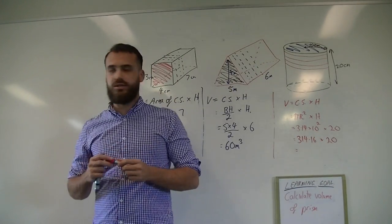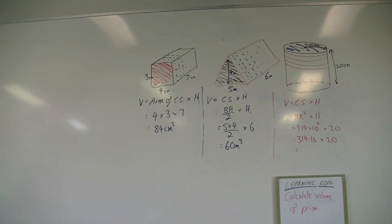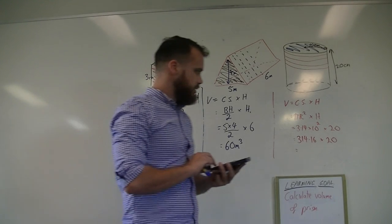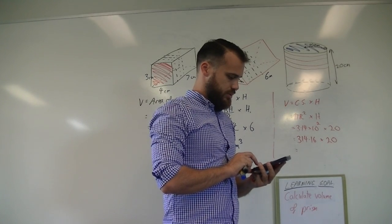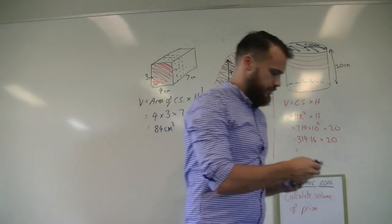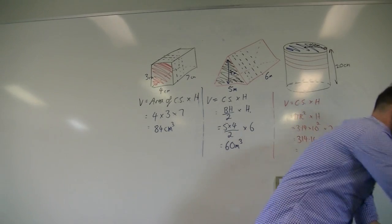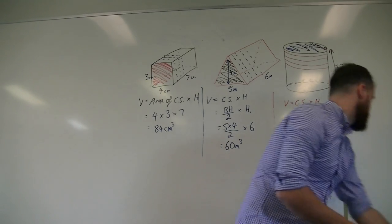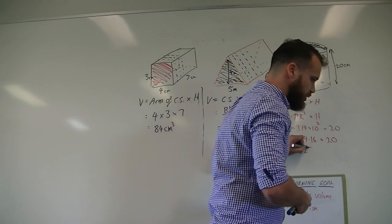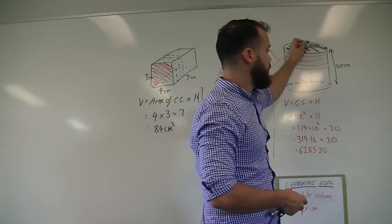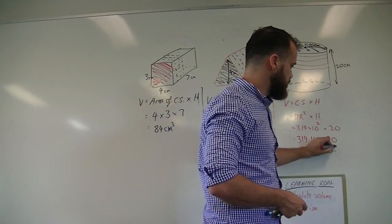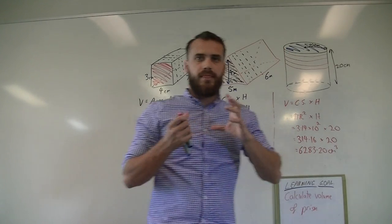Might just need to use my calculator for that one. Three hundred and fourteen point one six times twenty. That's six thousand two hundred and eighty three point two zero. And they're centimeters, so it's centimeters cubed.